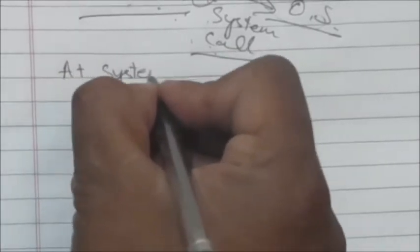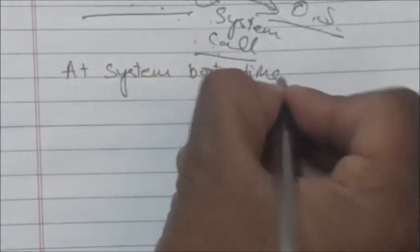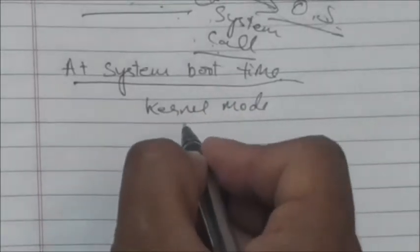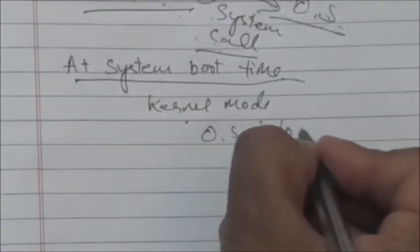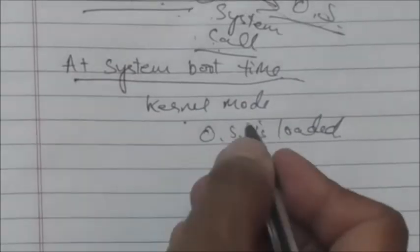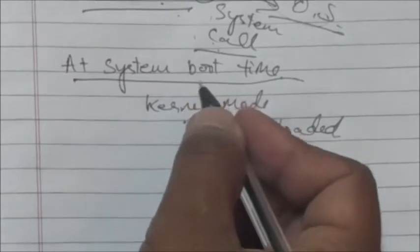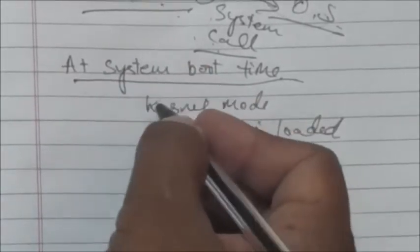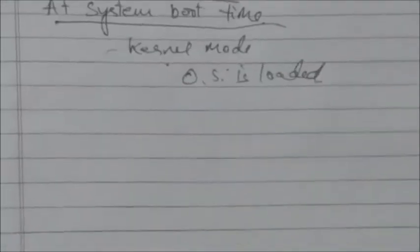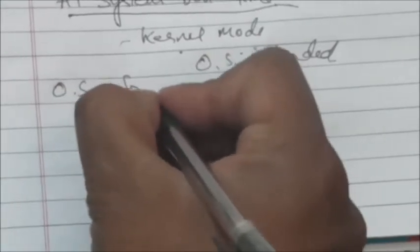At system boot time, the hardware starts in kernel mode and the operating system is loaded. After that, user applications start in user mode. Before passing control to a user program, the system always switches to user mode.